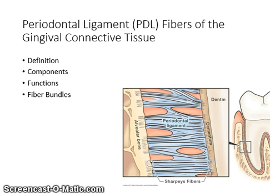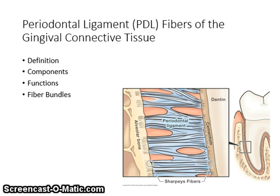The fiber bundles of the periodontal ligament are a specialized connective tissue that surrounds the root of the tooth and connects it with the alveolar bone. These fibers are the largest component of the PDL. Blood vessels and nerves are also found in the periodontal ligament space, which has a rich supply of both. The functions of the periodontal ligament are supportive, sensory, nutritive, formative, and resorptive. The supportive function is the major function of the PDL, which is to anchor the tooth to its bony socket.